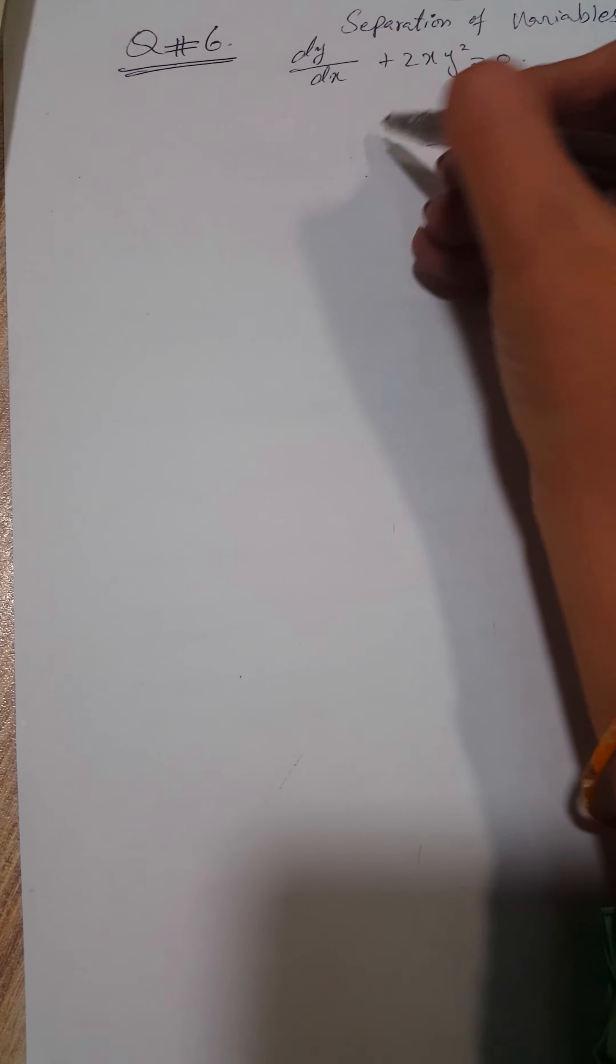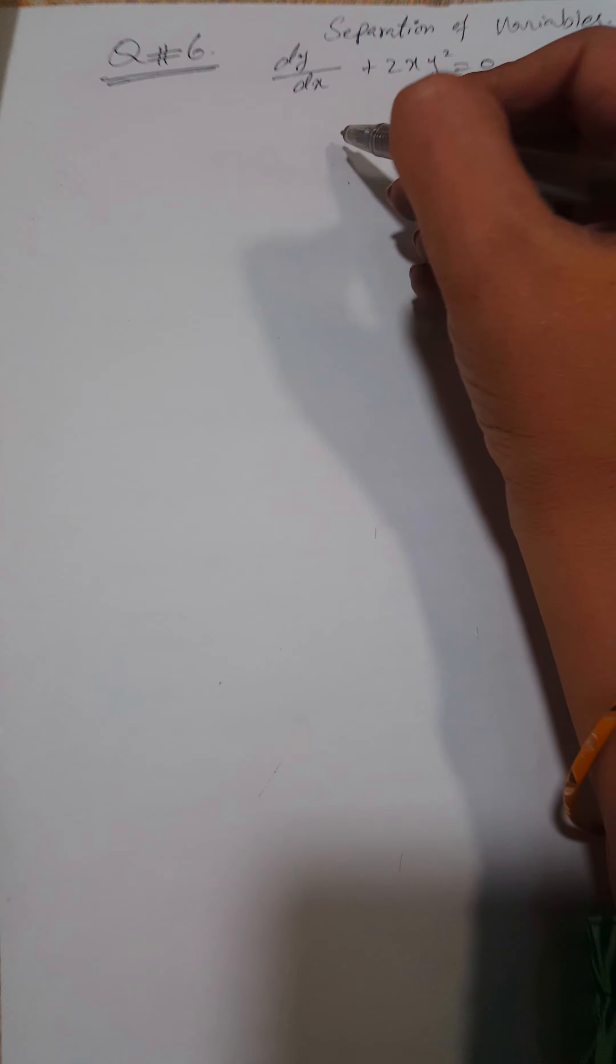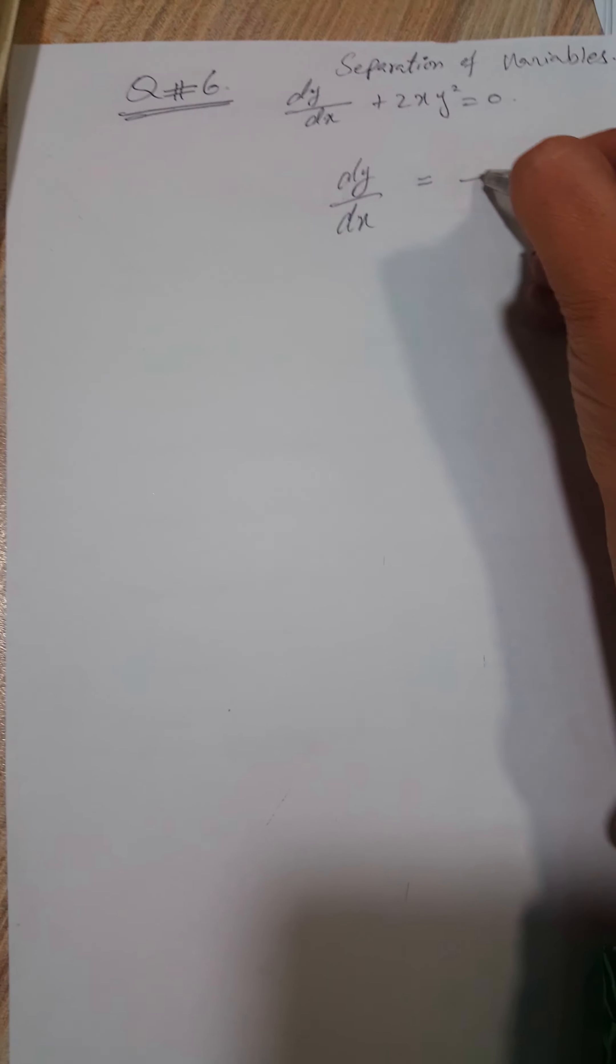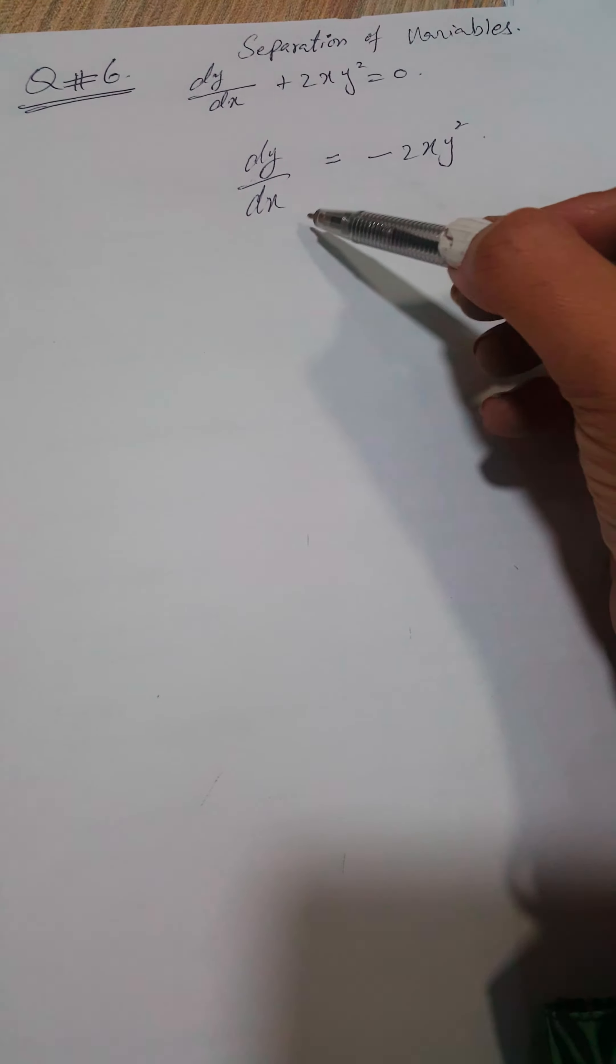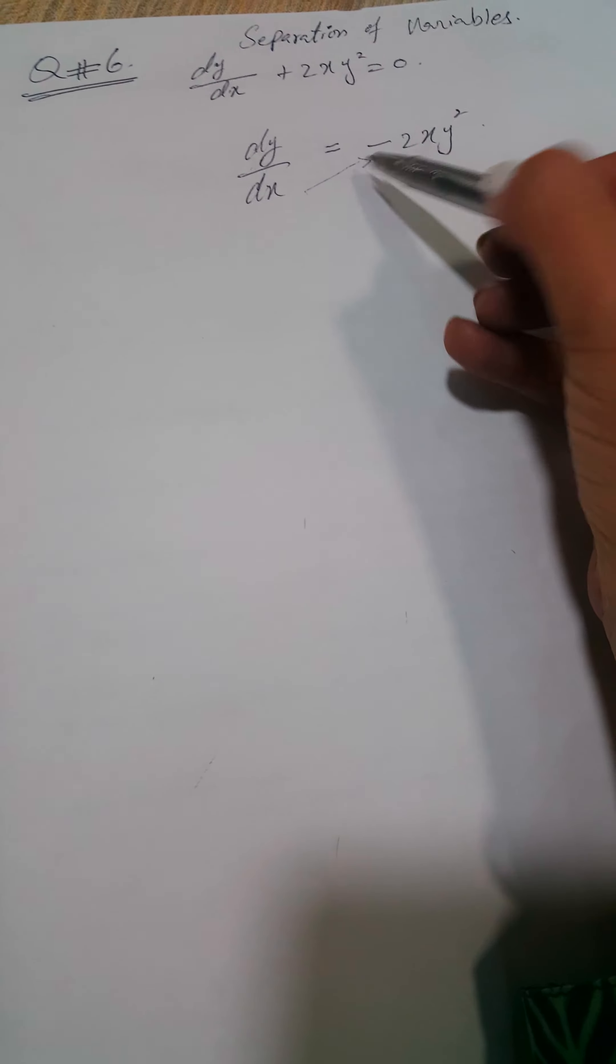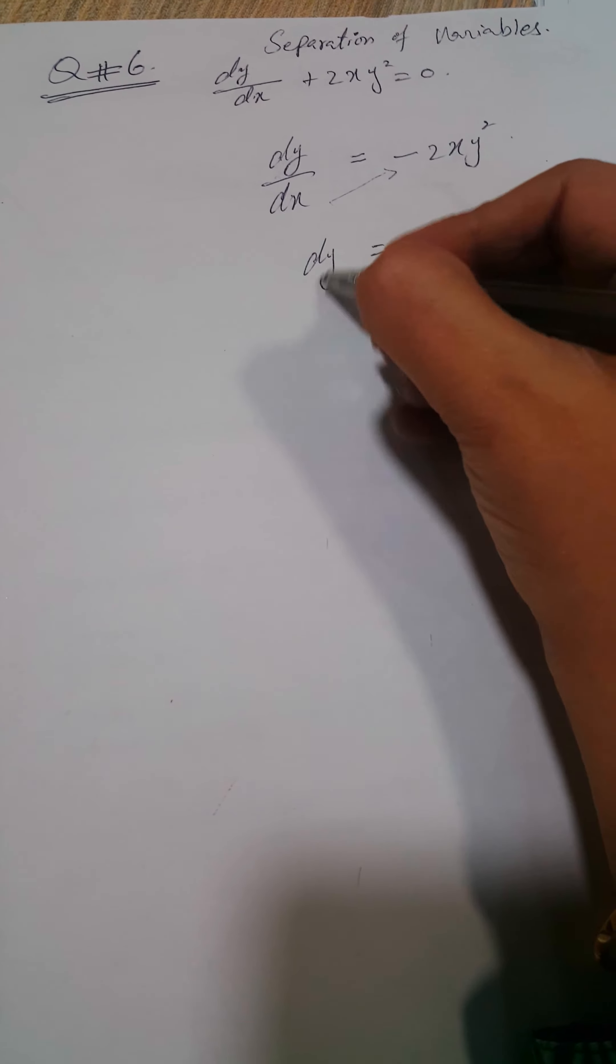That's why first I do like this: dy/dx = -2xy². By cross multiplication, dx will be on the right side: dy = -2xy² dx.